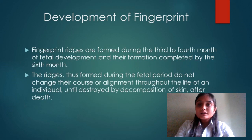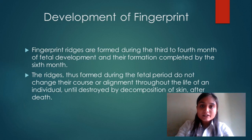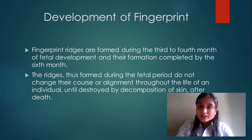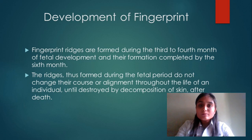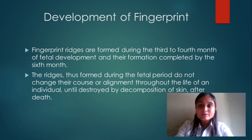Development of fingerprint: fingerprint ridges are formed during the third to fourth month of fetal development and their formation is completed by the sixth month. The ridges formed during the fetal period do not change their course or alignment throughout the life of an individual, until destroyed by decomposition of skin after death.